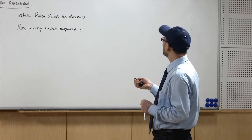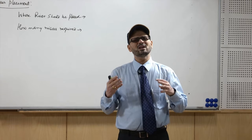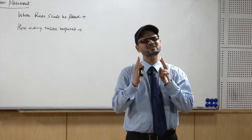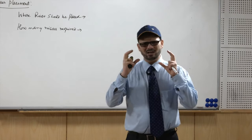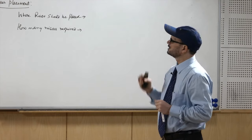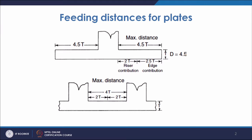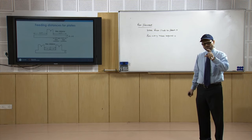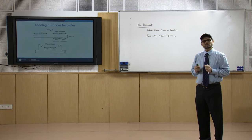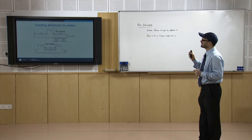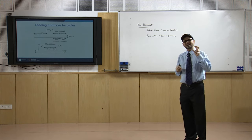For non-uniform castings, the riser should be placed at the chunky part where the maximum chances of shrinkage exist. When we talk about cross sections like plates or bars, we need to know where the riser should be placed and how many are required. For this, we need to know that if we place one riser, up to what distance it can feed. That distance is known as feeding distance. We will discuss feeding distances for plates and bars.